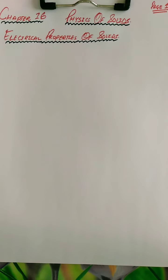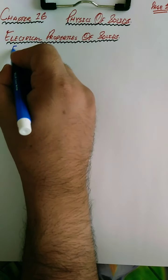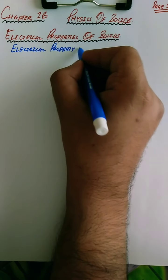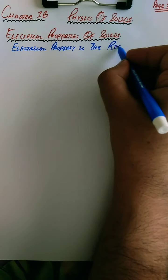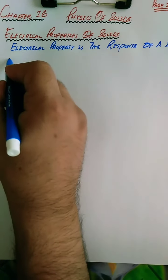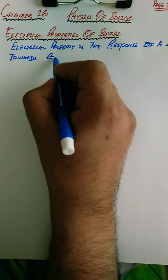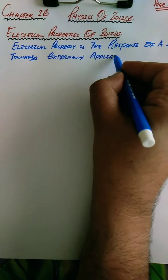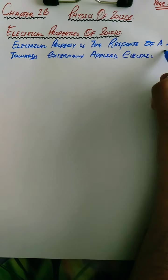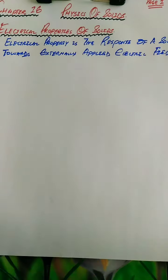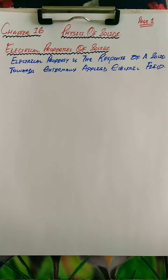The electrical property of the solid is the response of a solid towards an externally applied electric field - meaning when you apply an electric field on a solid, what is its response? Does it conduct electricity or not? Now to explain the electrical properties of solids, we have both classical theories and modern theories.